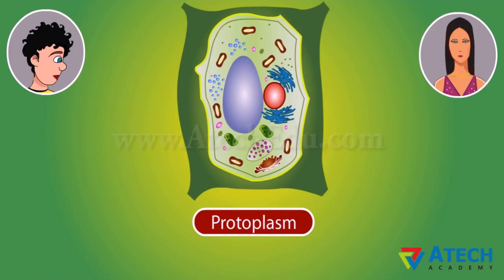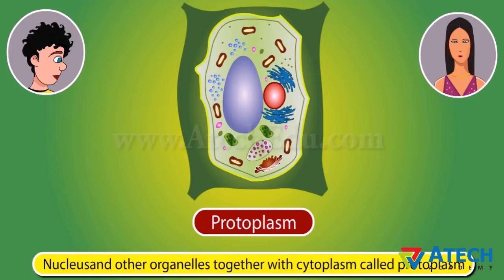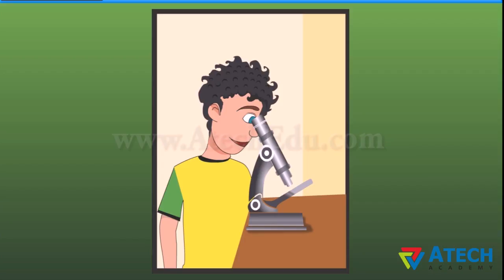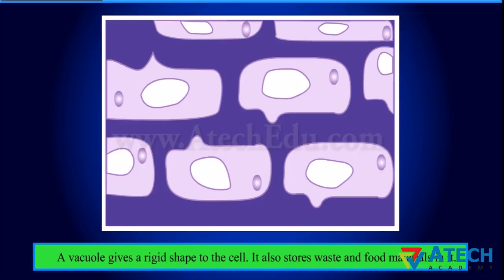Nucleus also acts as control center of the activities of the cell. Nucleus and other organelles together with cytoplasm are called protoplasm. Protoplasm is called the living substance of the cell. When you observe onion cells under the microscope, you can notice a blank-looking structure in the cytoplasm called vacuole. A vacuole gives a rigid shape to the cell and also stores waste and food materials.